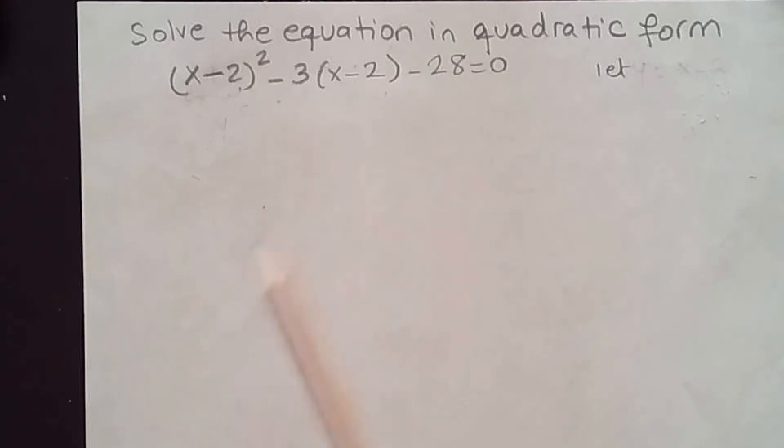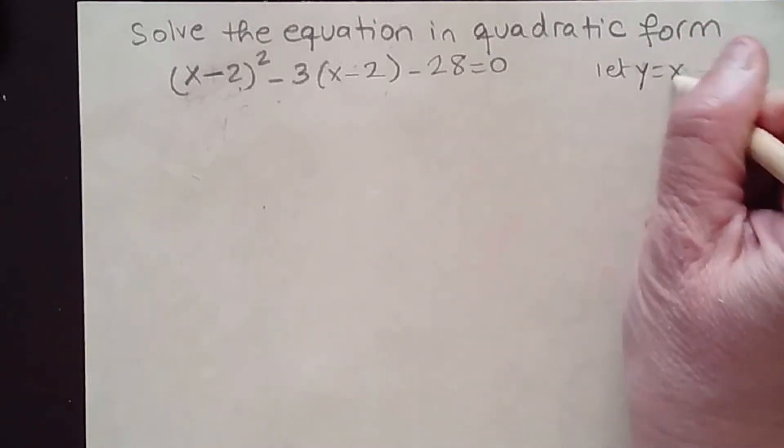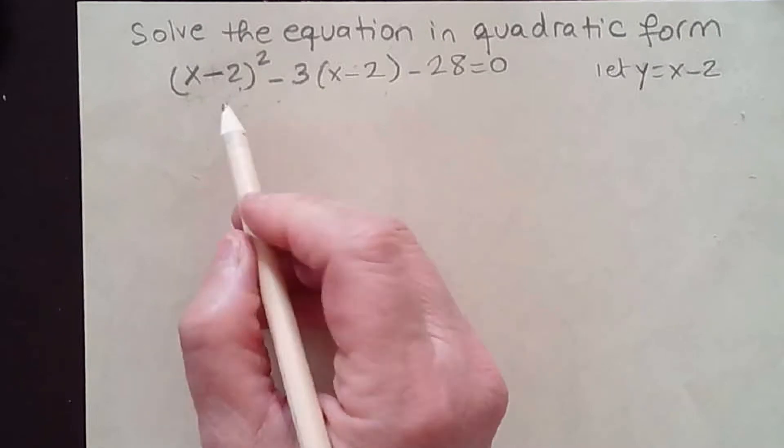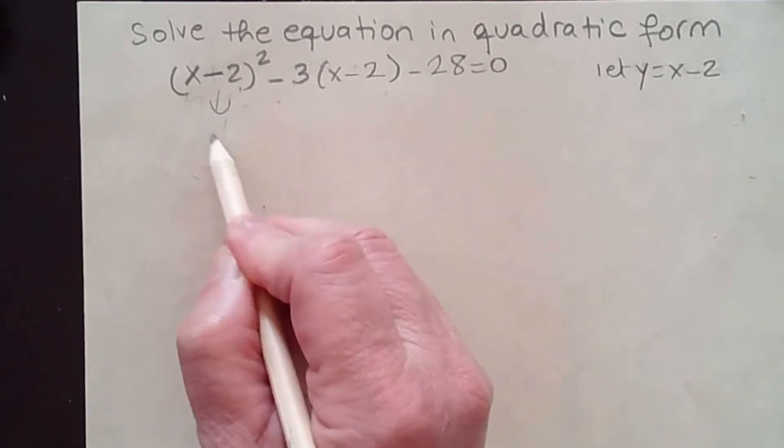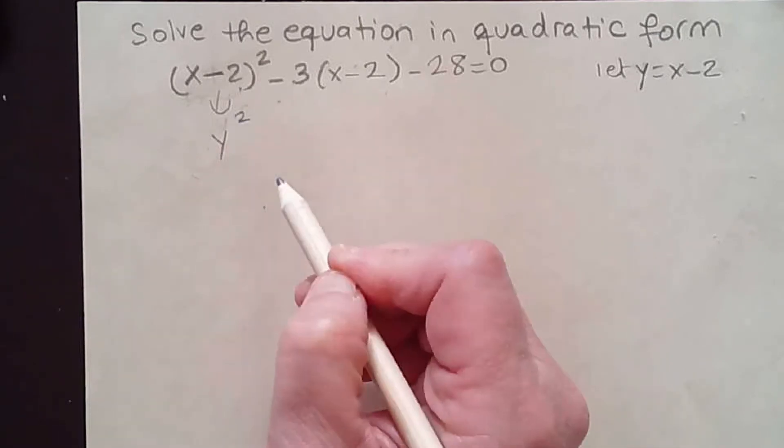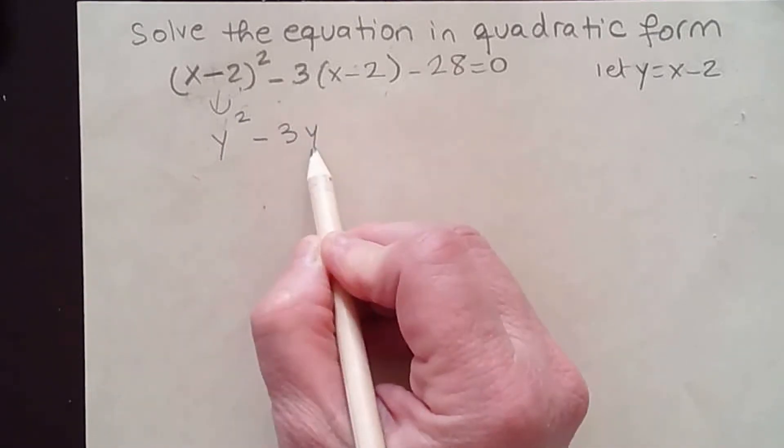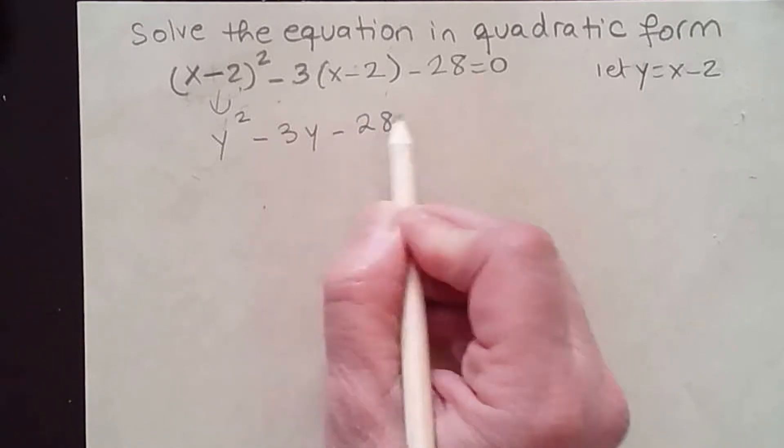Now if we let some variable be equal to x-2, so I'm going to let y be equal to x-2, then this will be replaced with y. So we end up with y² - 3y - 28 = 0.